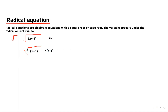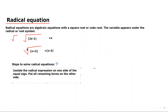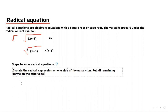Now, there are some steps to solve radical equations. What are those steps? The first step is to isolate the radical expression on one side of the equal sign and put the remaining terms on the other side of the equal sign. This is the first step in solving a radical equation.